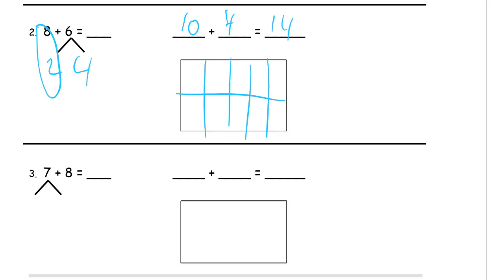A lot of times figuring out the second part of the number bond is difficult. And if it is, draw the picture first and count it. So here's our 8: 1, 2, 3, 4, 5, 6, 7, 8.